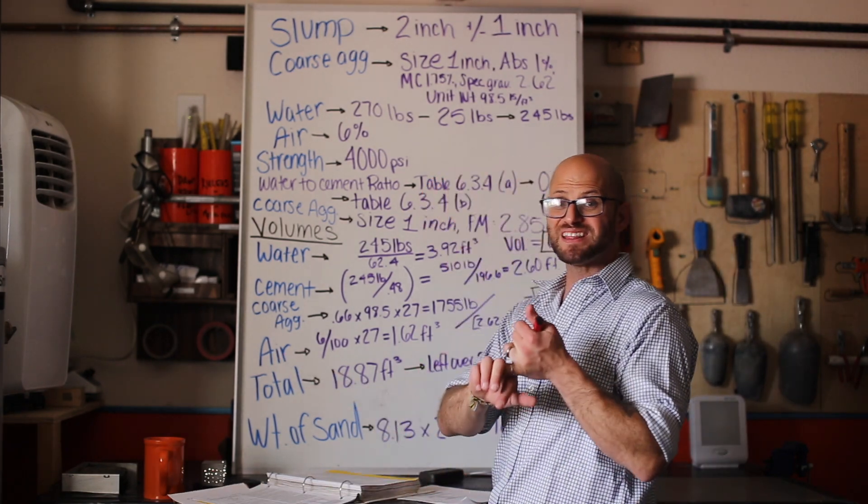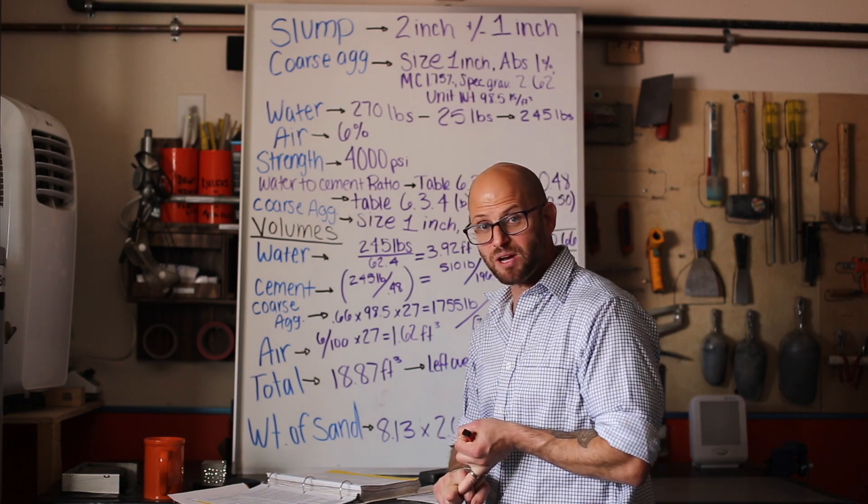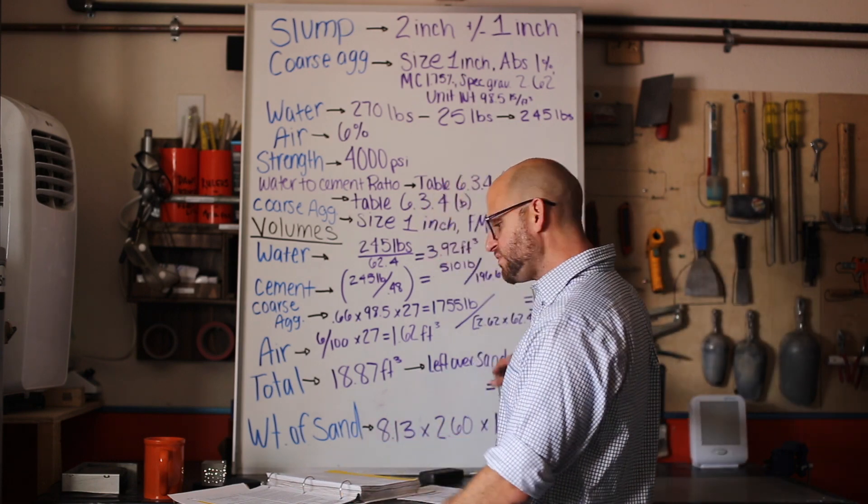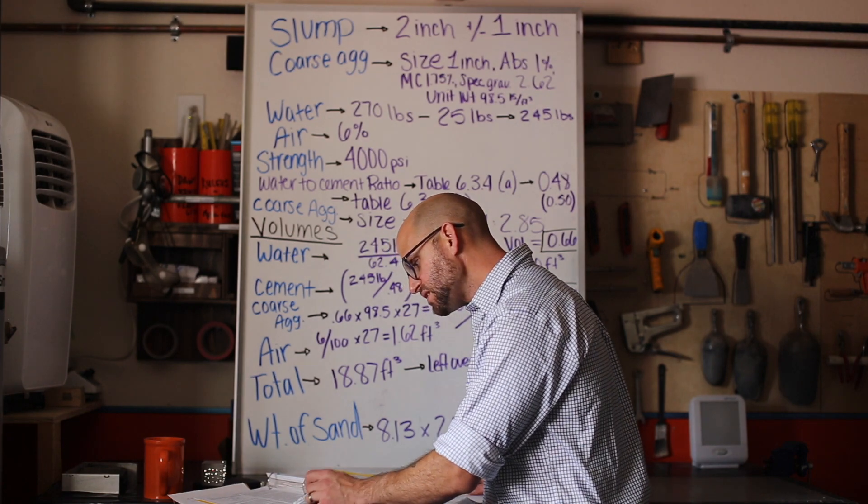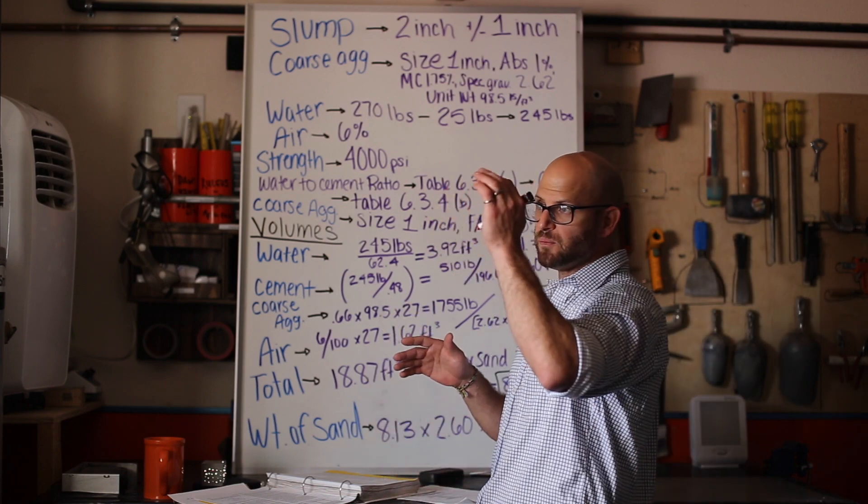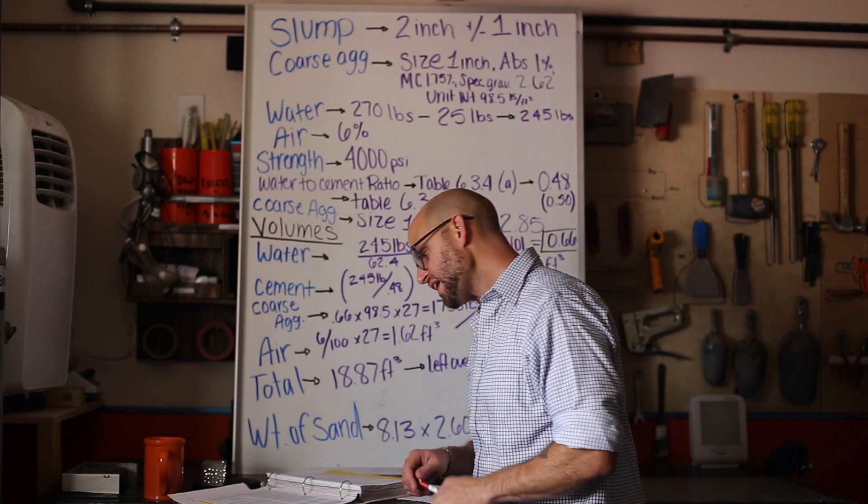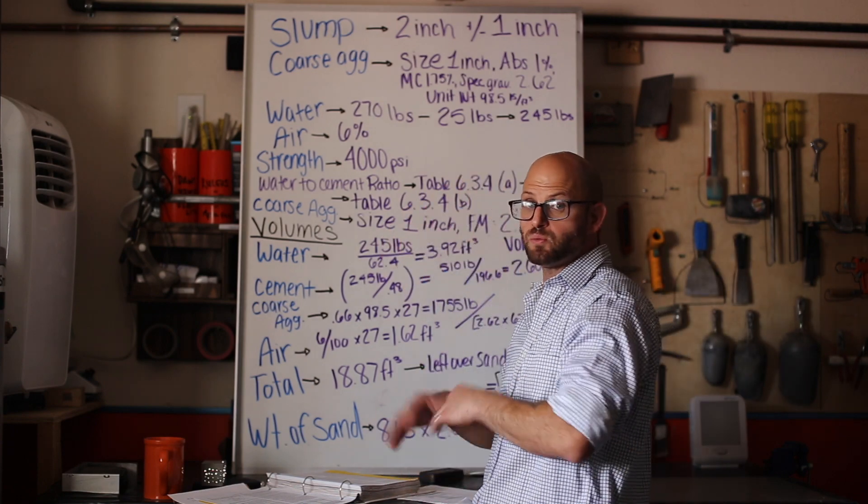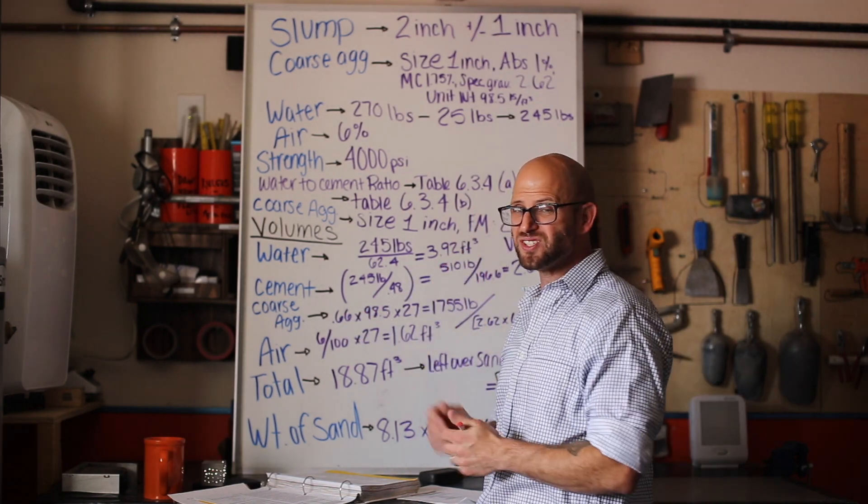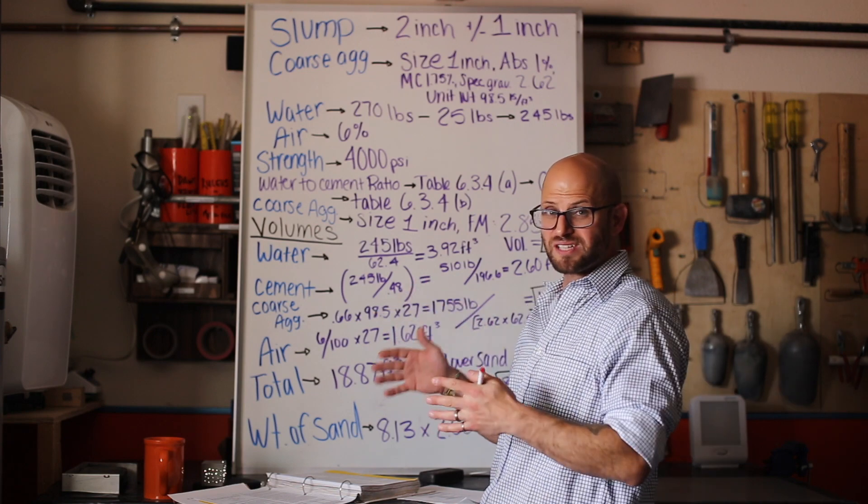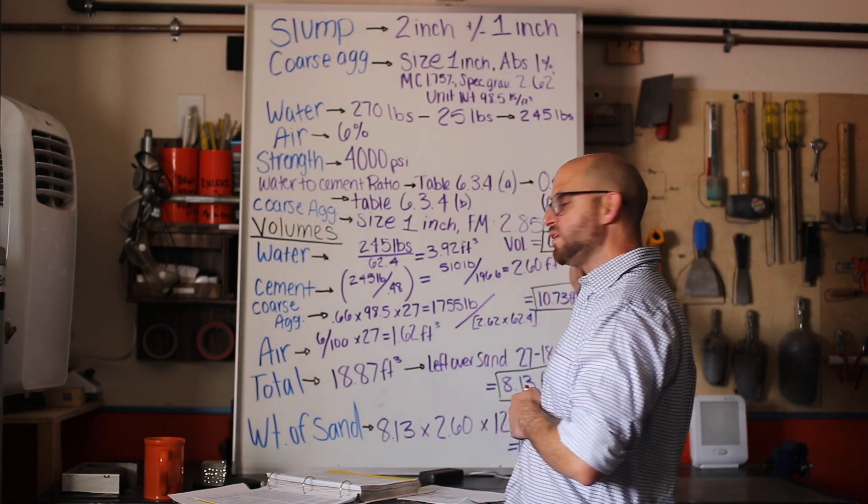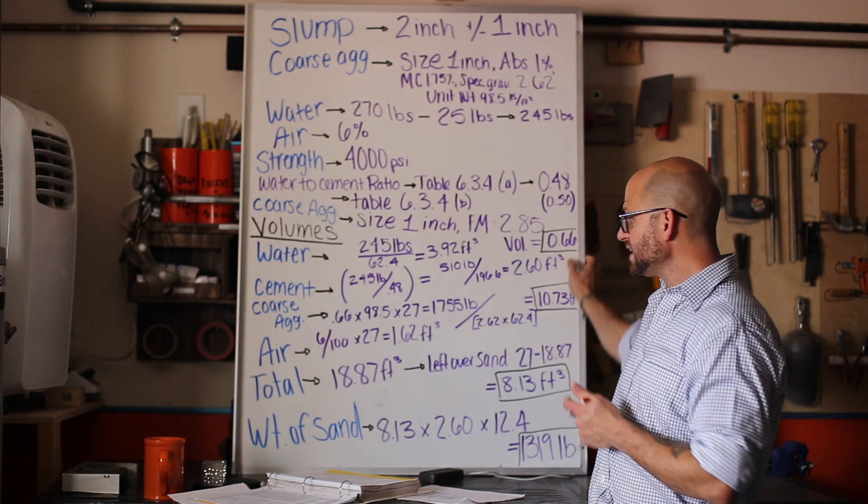The next thing that we do is we go back to our tables. We've got to use this table 6.3.6 to determine the amount of coarse aggregate, the weight of our coarse aggregate that we're using in our mix. It's based on the size of our aggregate, the fineness modulus of our sand, and that dry rodded unit weight. Based off of this table, we've got one inch maximum size of the aggregate. The fineness modulus that we had which was 2.85, when you look at your table it gives you this volume of coarse aggregate per unit volume of concrete.